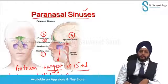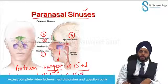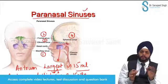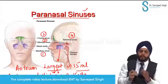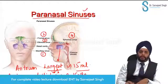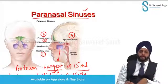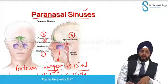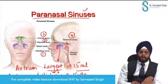This sinus keeps developing and reaches adult size by fifteen to eighteen years of age. Remember: adult volume is fifteen ml, and it reaches adult size by fifteen to eighteen years.